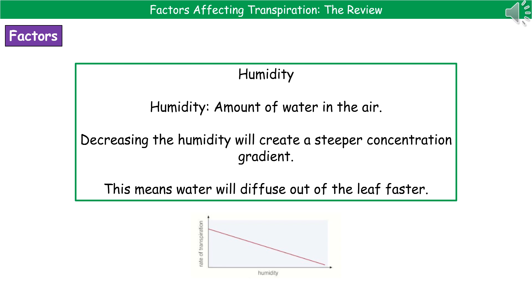The final factor is humidity — the amount of water in the air. Something with high humidity has lots of water in the air; something with low humidity has very little. Decreasing the humidity will create a steeper concentration gradient, and as a result water diffuses out of the leaf faster. Be careful when looking at the graphs: as humidity increases, it decreases the rate of transpiration.